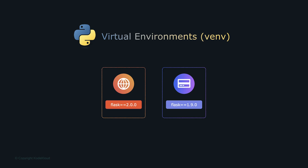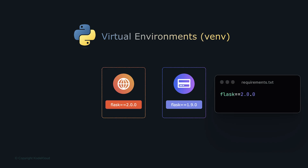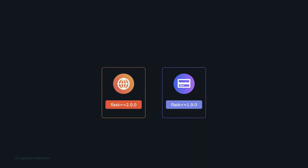This ensures no external dependencies interfere with the application, and that the same explicit dependency packages are consistently applied across development, staging, and production. But what about tools the application relies on that are outside of Python's dependencies — such as the `curl` command or other system-dependent tools? How do we factor those configurations within our dependencies?